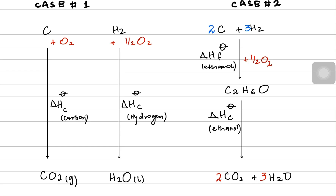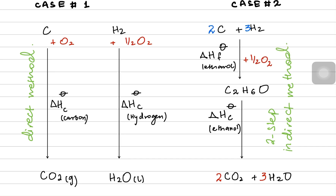If you notice, the reactants were carbon and hydrogen in both scenarios, and the products are also the same. In case one I am doing a direct method — combusting carbon and hydrogen directly. In case two I am doing a two-step indirect method. But that shouldn't matter because Hess's Law says the path doesn't matter. If I balance case one by putting two carbons and three hydrogens, the reactants and products are identical.